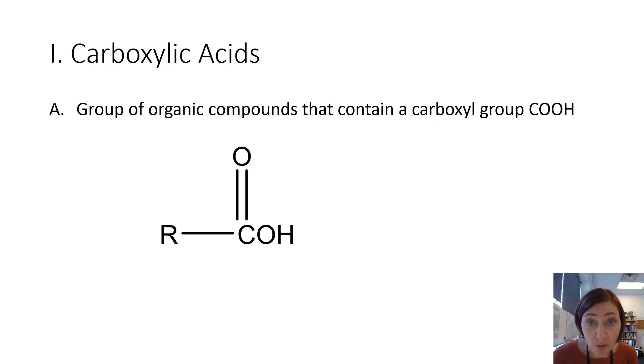Let's start at the same place we always start with a new family. Carboxylic acids are a group of organic compounds that contain a carboxyl group. It's oftentimes abbreviated COOH, but the structure is a carbon chain of any length, which is R, and you have a carbonyl and an OH right next door.